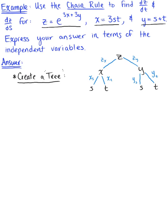We want to find two partial derivatives. First, the partial derivative of z with respect to t. From the tree, this equals the partial derivative of z with respect to x multiplied by the partial derivative of x with respect to t, plus the partial derivative of z with respect to y multiplied by the partial derivative of y with respect to t.